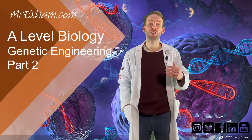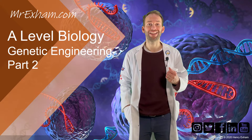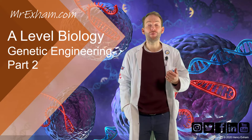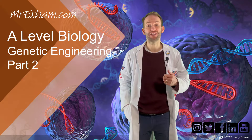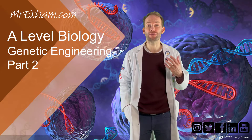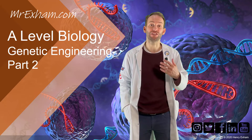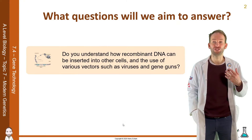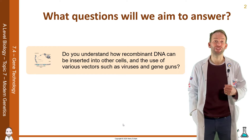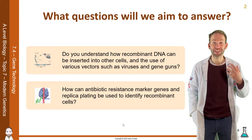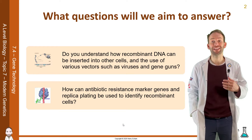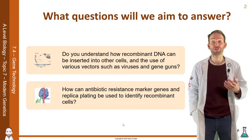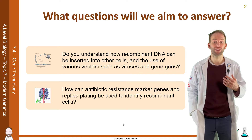This is the topic of gene technology. We're going to look at how recombinant DNA can be inserted into other cells and how the use of various vectors such as viruses and gene guns can be used. We will also look at how antibiotic resistance marker genes and replica plating can be used to identify recombinant cells.